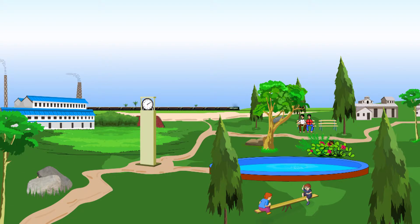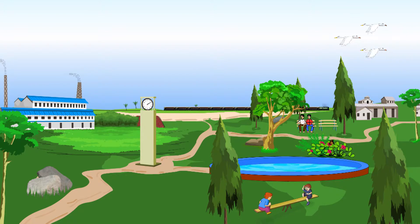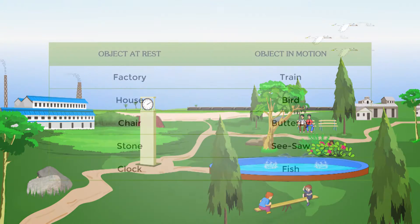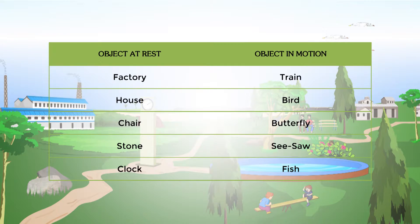Classify these objects as moving bodies and objects at rest respectively. The classification is shown on the table.